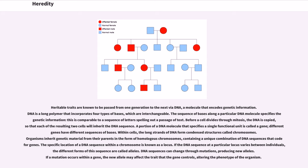Within cells, the long strands of DNA form condensed structures called chromosomes. Organisms inherit genetic material from their parents in the form of homologous chromosomes, containing a unique combination of DNA sequences that code for genes. The specific location of a DNA sequence within a chromosome is known as a locus. If the DNA sequence at a particular locus varies between individuals, the different forms of this sequence are called alleles. DNA sequences can change through mutations, producing new alleles. If a mutation occurs within a gene, the new allele may affect the trait that the gene controls, altering the phenotype of the organism.